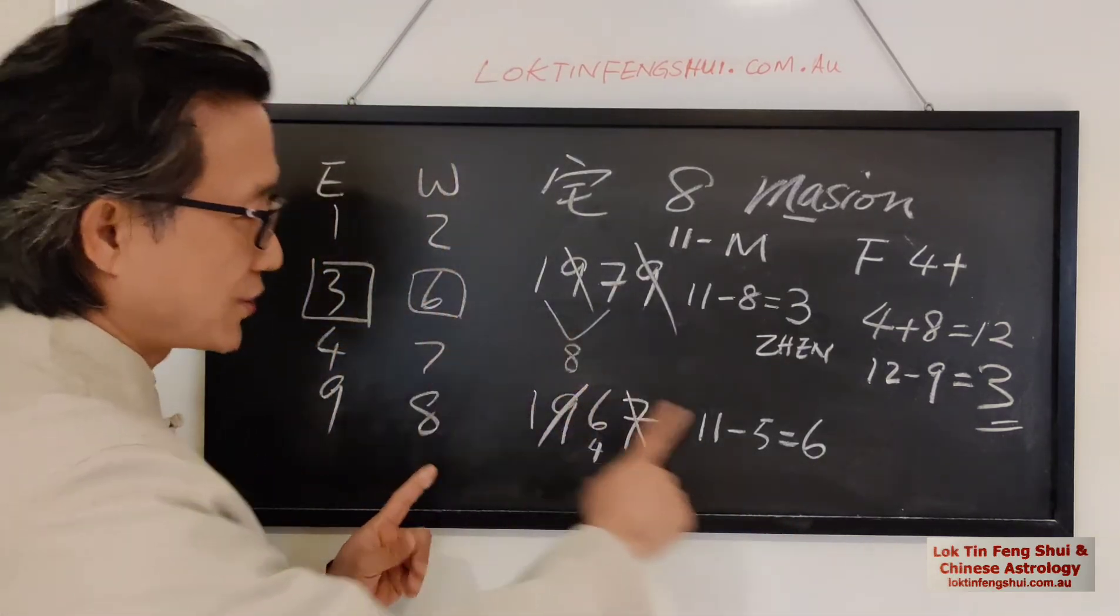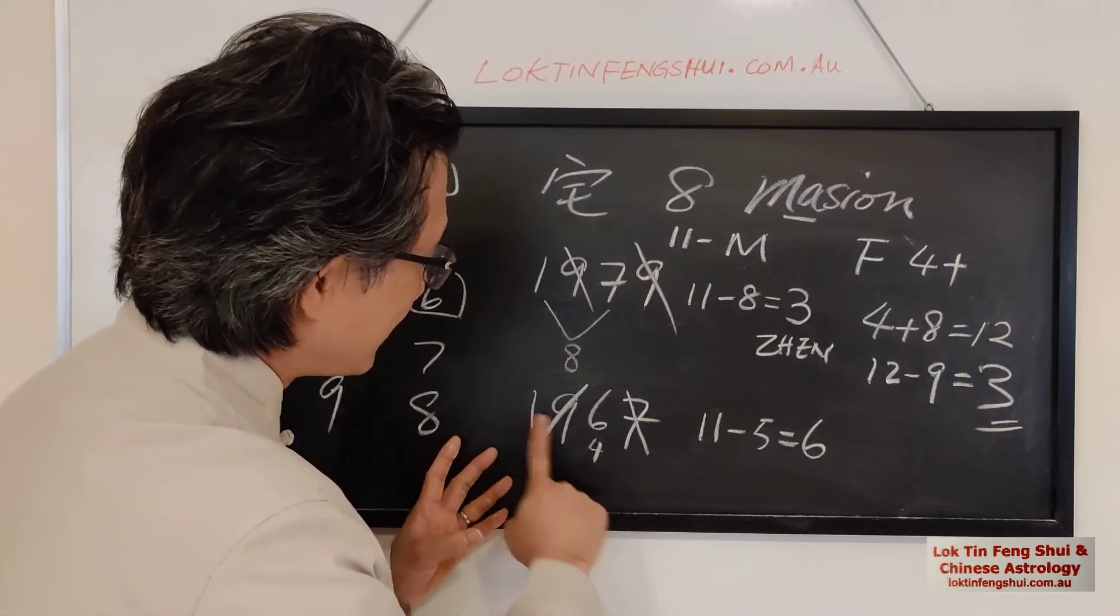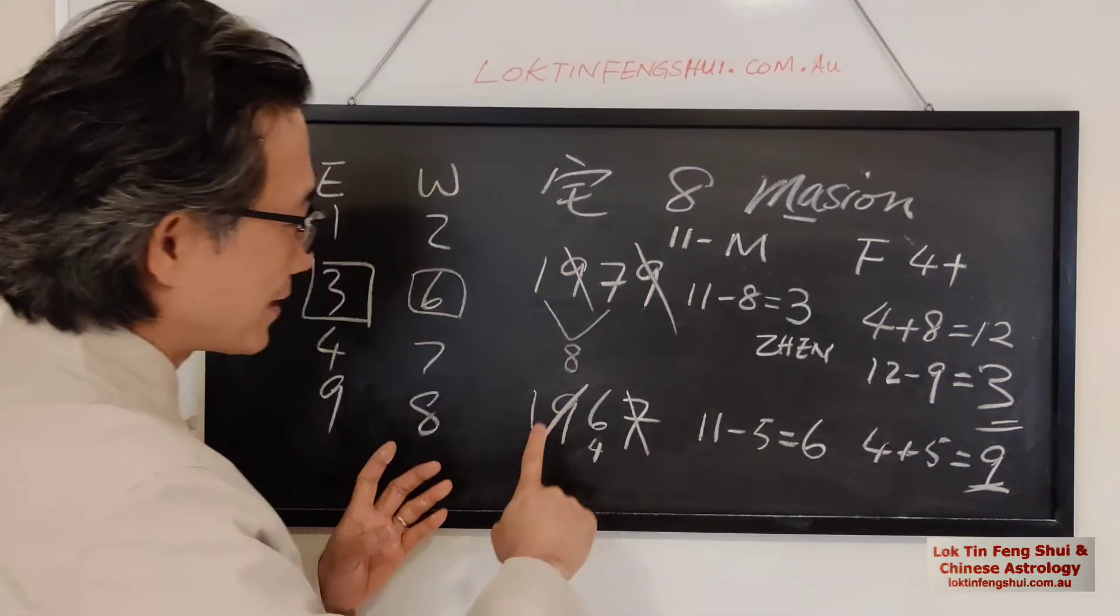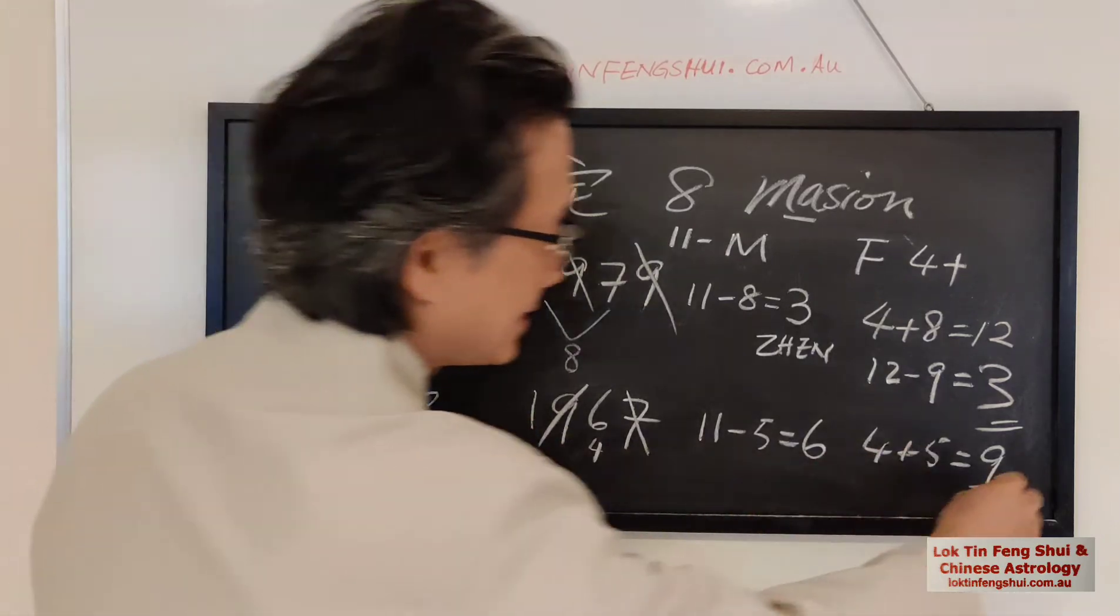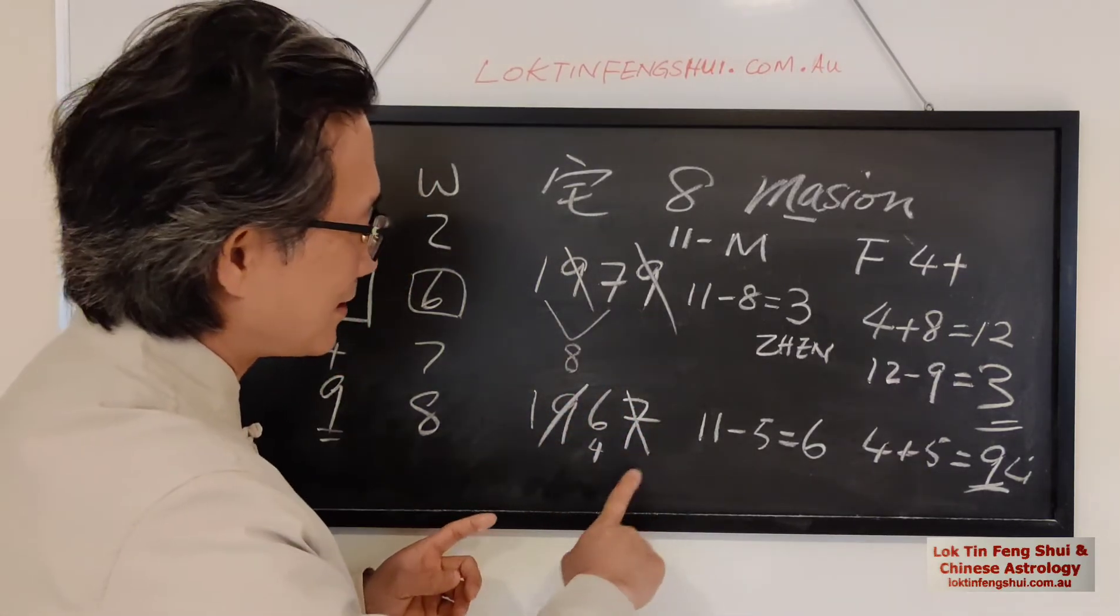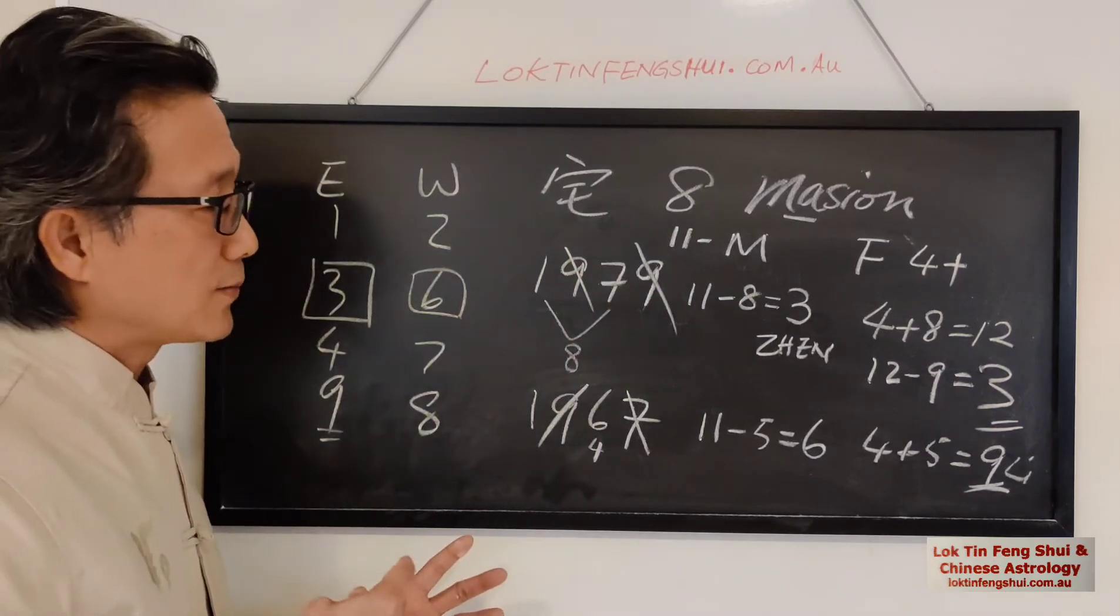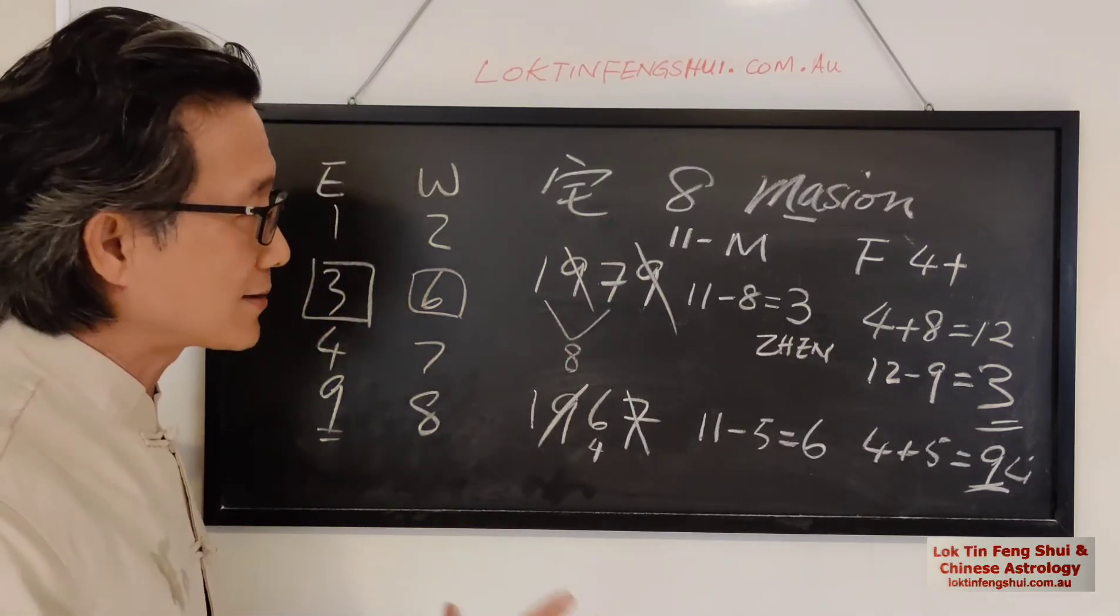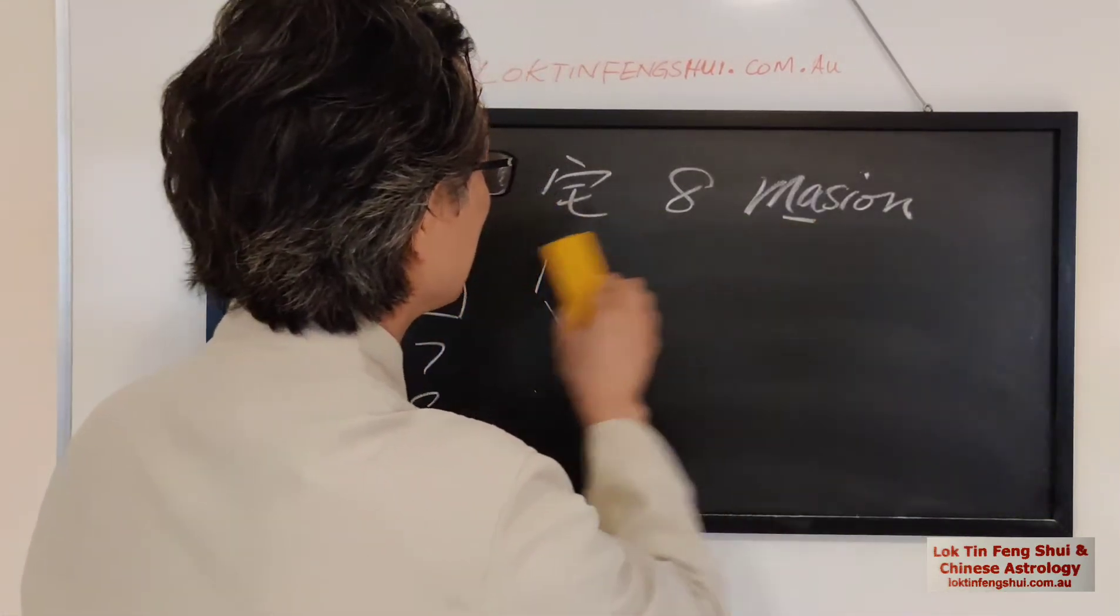So what about the lady? A lady will be, so we got 5 here, right? So 4 plus 5 equals 9. So a lady born in 1967, her Mingua is 9-Li-Gua. So 9-Li is the East group. So that's how you find out. Very easy. You just cancel out the 9, doesn't matter is in the tens or in the hundreds, just cancel that. And there is one thing you need to be aware of is someone born after 2000.